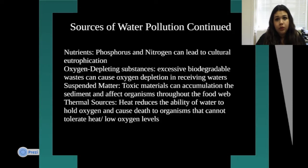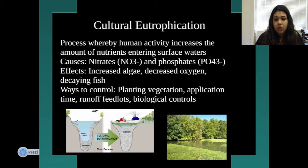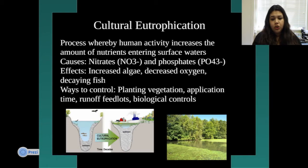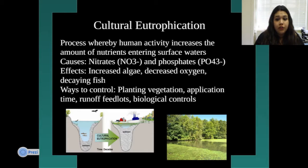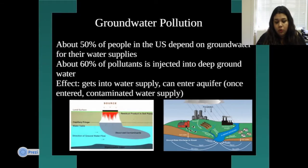Thermal sources — heat — reduce water's ability to hold oxygen and cause death to organisms that cannot tolerate heat or low oxygen. Cultural eutrophication is a process whereby human activity increases the amount of nutrients entering surface waters, causing increased nitrates and phosphates. Effects include increased algae growth, decreased oxygen, and decaying fish. Controls include planting vegetation, managing runoff and feed lots, and biological controls.